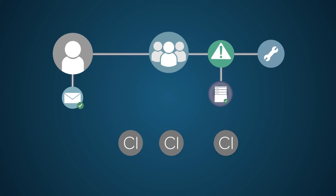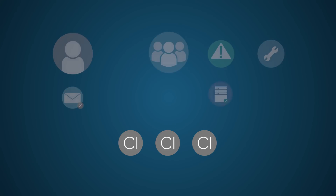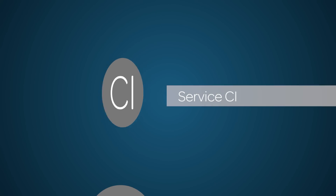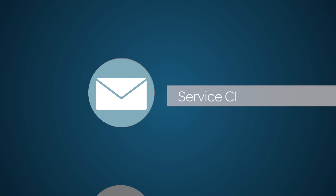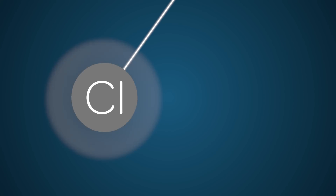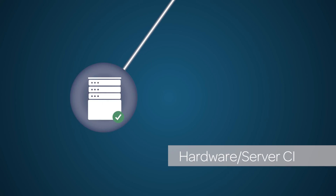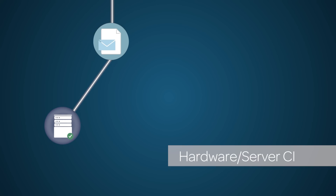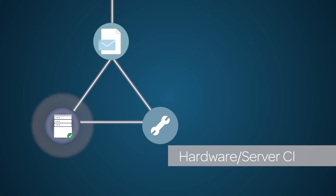In this scenario, we can identify several configuration items as they relate to the CMDB. First, we have a Service CI, which is the email service that the customer uses. We also have the Application CI, which is the email application. The next CI is the email server itself, which is a Hardware Server CI. And finally, the change that was created contains a CI field — in this case, the change record references the Hardware Server CI.